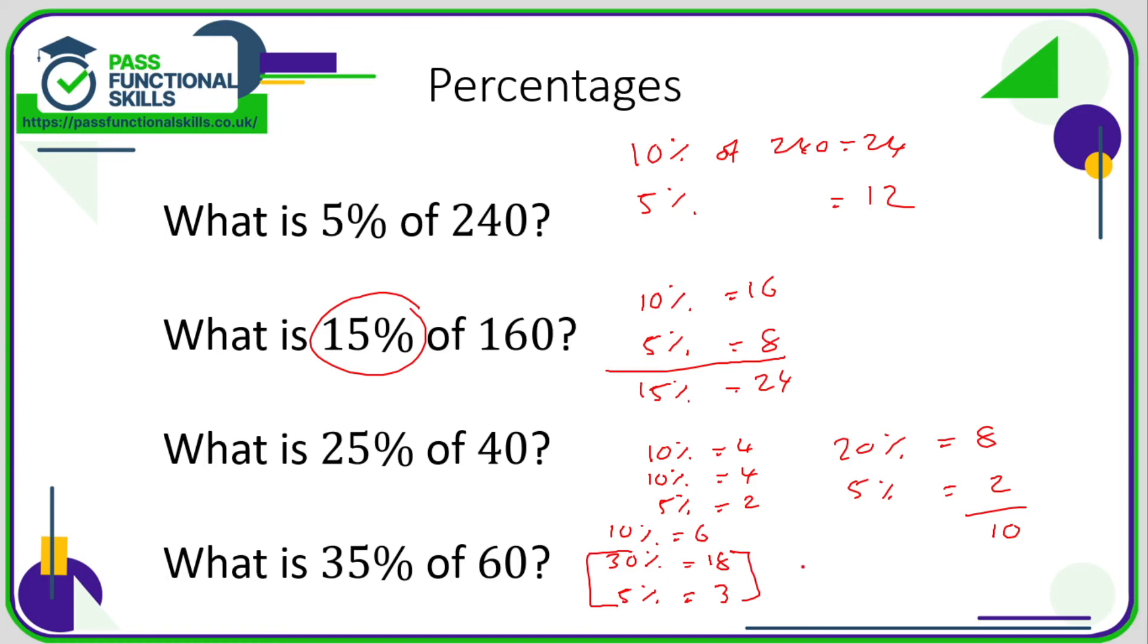So for any multiple of 5%, just break it down into blocks of 10% and 5%.